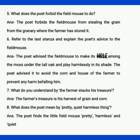Eighth question: what does the poet mean by 'pretty quiet harmless thing'? Ki bhai kisko kya raha hai poet — pretty quiet harmless thing? The poet finds the little field mouse pretty, harmless, and quiet. Yani ki poet field mouse ko pretty hai, harmless hai, and quiet hai kehta hai. Pehle question mein uski appearance padi thi ki wo dikhta kaisa hai, aur yahan par uska nature bataya — ki wo pretty hai, harmless hai, and quiet hai.